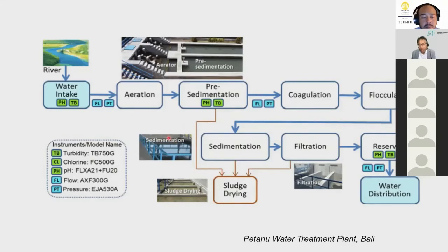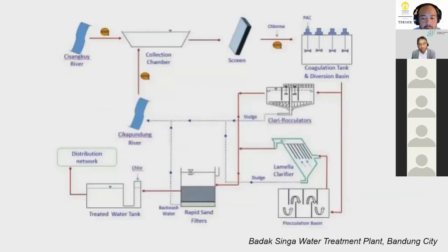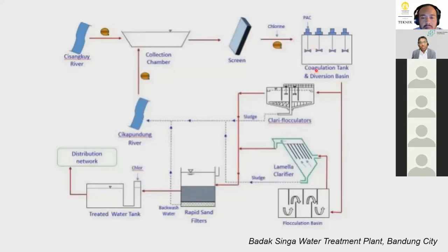The Badak Singa Water Treatment Plant in Bandung is also shown. Its process includes a collection screen, coagulation and flocculation stage, a first separation stage using lamella-type systems, rapid sand filters, likely a carbon filter, and then the treated water goes to the distribution system.